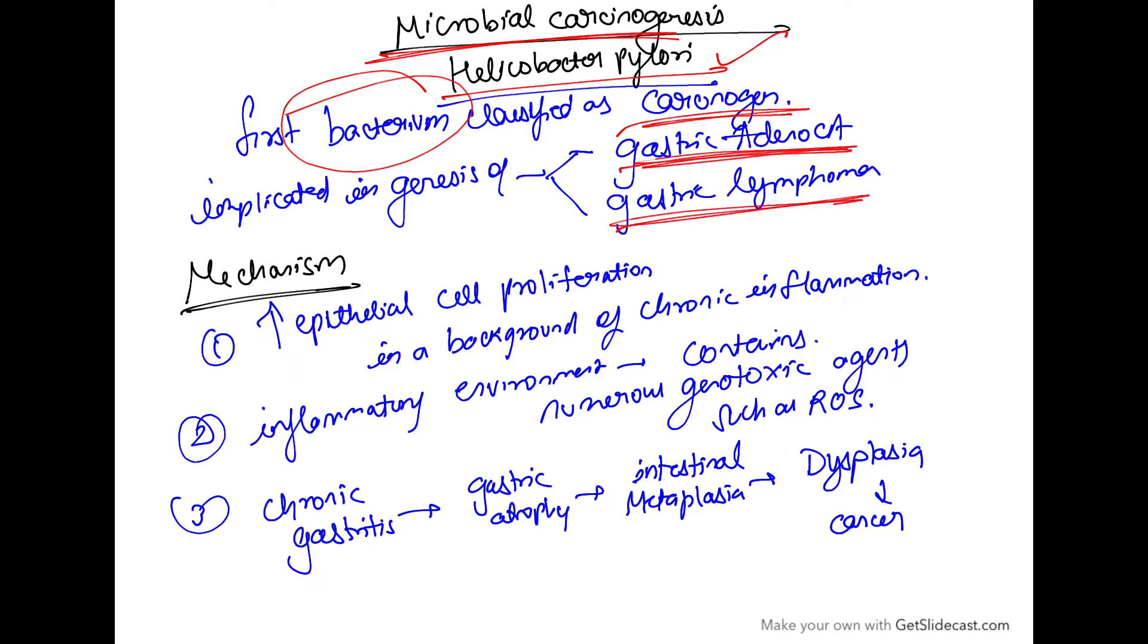gastric adenocarcinoma as well as gastric lymphoma. Now what is the mechanism? It increases the epithelial cell proliferation in a background of chronic inflammation.